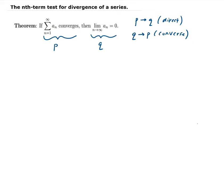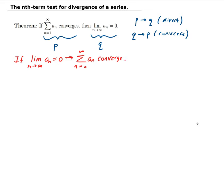So the converse statement would be: if the limit of a_N as n goes to infinity equals zero, this would imply that the infinite series converges. The converse is not always true — so this statement is not always true. It's very important to realize that.